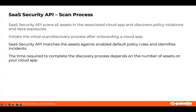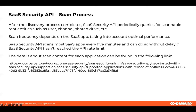The scan time depends on the number of assets in the cloud app. After the initial backward scan is completed, SaaS Security API continues scanning assets periodically. It searches for root entities such as users, channels, shared drives, and other supported types. The scan frequency depends on different factors — one of which is the app API rate limit, which we need to consider to avoid affecting application performance. The scan runs almost every five minutes if it hasn't reached the API rate limit.